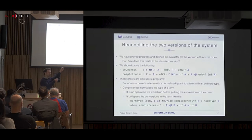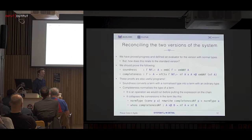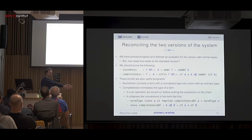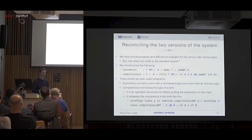Interestingly, if we think about these as programs rather than theorem statements, they're useful programs: the completeness direction takes a term and normalizes its type — useful if you want to store something with a normalized type on the blockchain — and the soundness direction takes a normalized thing and converts it back to an ordinary term. The extra property that A is beta-eta equal to its normal form is the soundness property from a standard normalization proof.